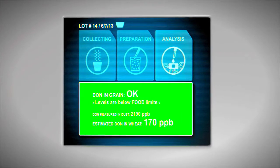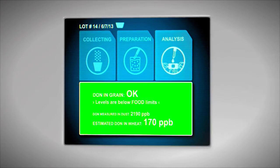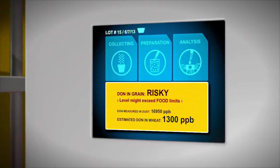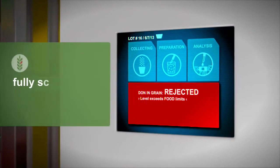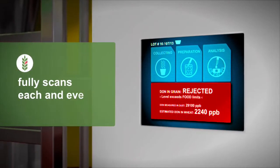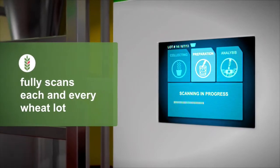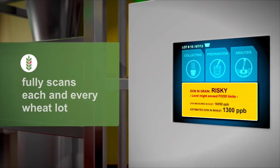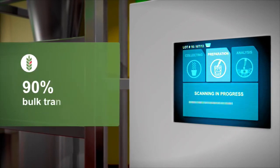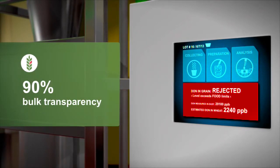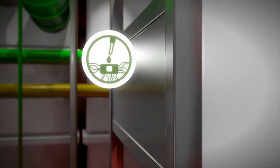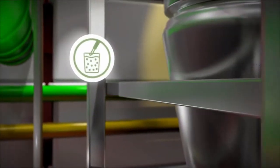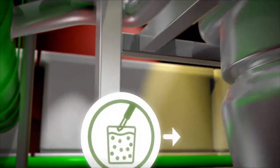Instead of estimates based on a limited number of randomly taken incremental samples, MycaHunt fully scans each and every wheat lot for contaminants in its entirety, guaranteeing 90% bulk transparency. Data will be continuously available with only a single one-time investment.